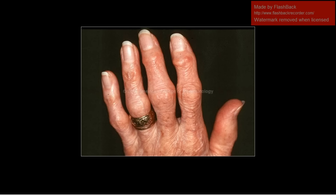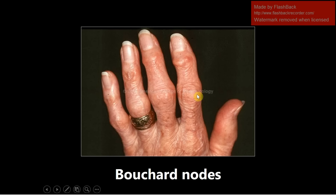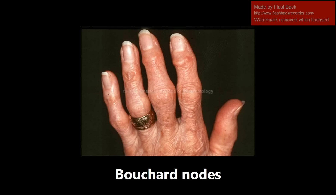This is going to be an image of Bouchard's nodes, commonly seen in osteoarthritis. These are osteophytes seen in the proximal interphalangeal joint — proximal, not the distal interphalangeal joints. The distal ones will be called Heberden's nodes, which we'll also see in a later video. A helpful memory trick: B comes before H, Bouchard comes before Heberden, and proximal comes before distal.